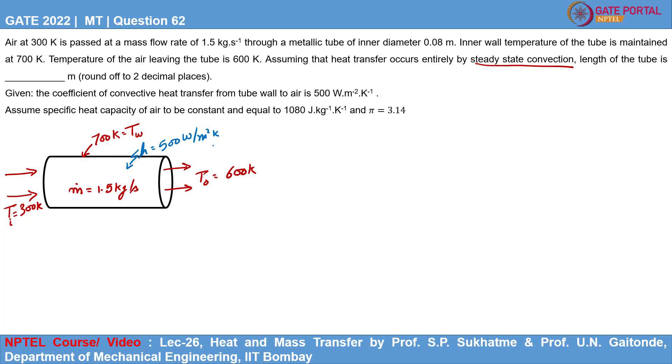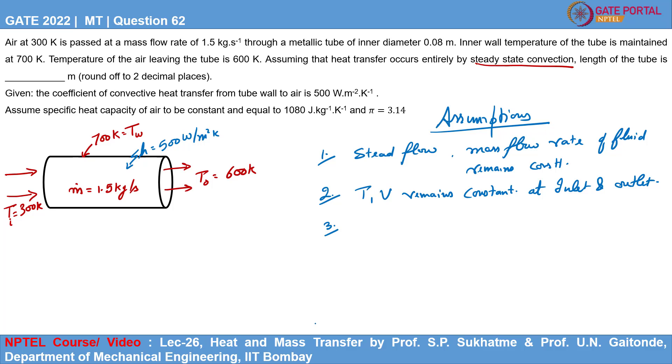There are certain assumptions that we need to make in this problem. The first assumption is it is a steady flow. By steady flow I mean the mass flow rate does not change. Second is the air property like temperature velocity, it remains constant at inlet and outlet. Next is the kinetic and potential energy changes are negligible.